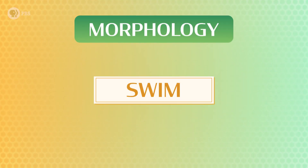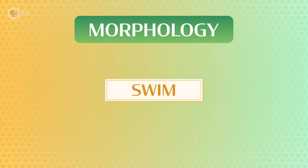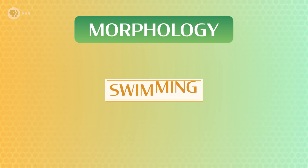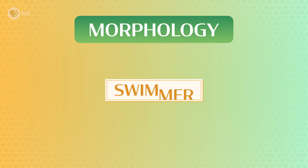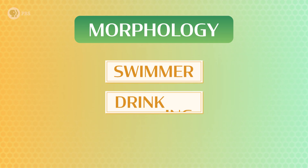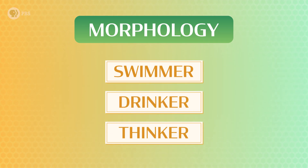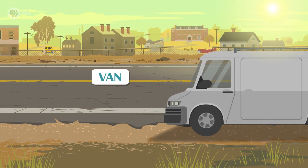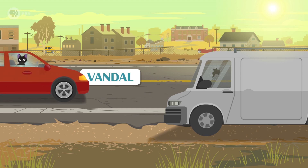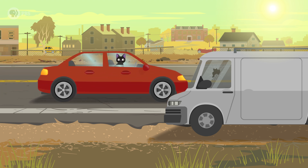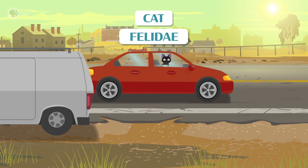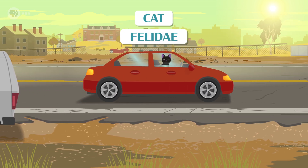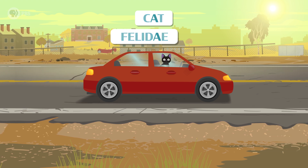Sometimes we can compare words by looking at the letters they share. This works well if a word has morphology. Take the root word swim, for example. We can modify it with rules — so if someone's doing it right now, they're swimming, or the person doing the action is the swimmer. Drinking, drinker, thinking, thinker — you get the idea. But we can't use morphology for all words. Like how knowing that a van is a vehicle doesn't let us know that a vandal smashed in a window.